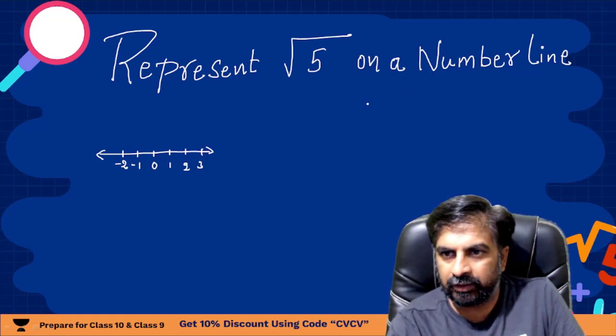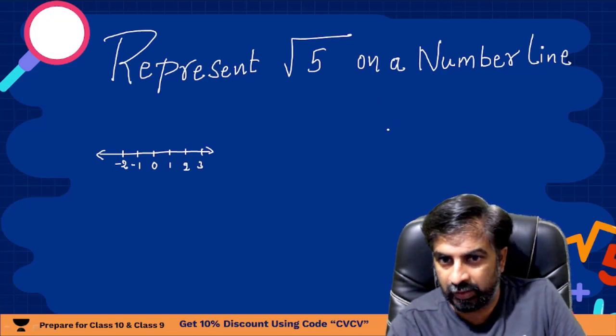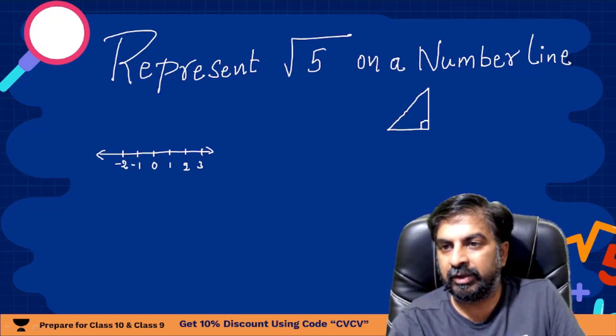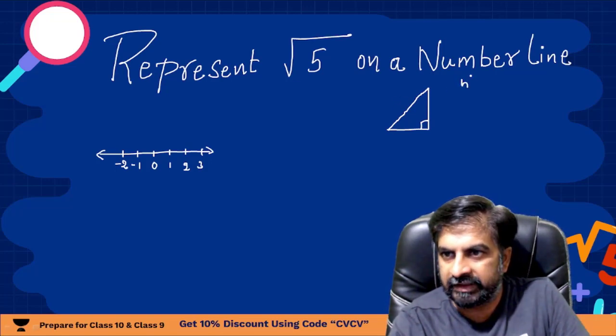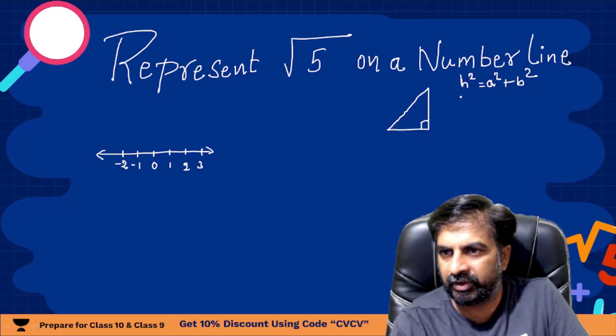How we can do? For that, first of all we need to make an imaginary right angle triangle. We need to make an imaginary right angle triangle because we know that in right angle triangle, hypotenuse is always h, h square is equals to a square plus b square.